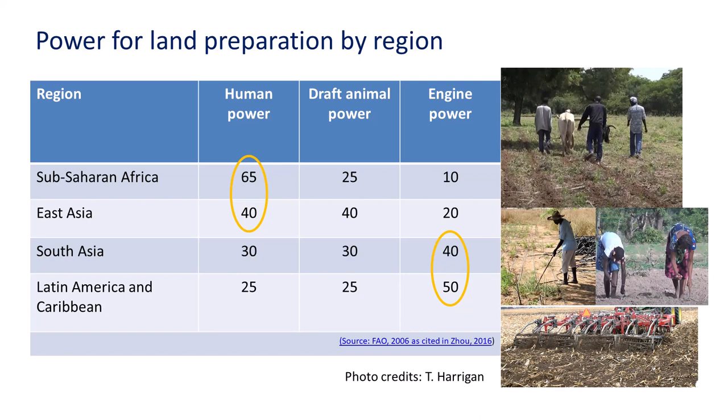Here is a regional look at the diversity of power sources for land preparation in Africa and beyond. Human power is most common in Sub-Saharan Africa and East Asia. Draft animal power ranges from 25% to 40% across all regions. Purchased inputs are a risk for small and poor farmers, particularly where supply and financing are unavailable, and engine power often increases where government policies support its development.